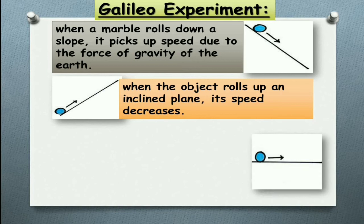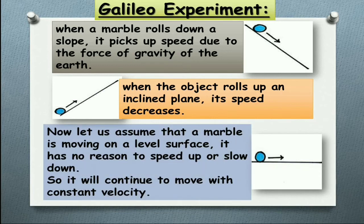Now, he took a plane surface and rolled it. And there should be no question of gravitational force, whether to increase the speed of the rolling body or decrease the speed. As there is no force, it should continue to move with a constant velocity.